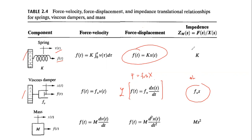Taking the Laplace transform of the damper equation with zero initial conditions, the resulting frequency domain expression is Fv·s·X(s). So the impedance ratio of force to displacement is Fv multiplied by s. This is similar to the inductive element in an electrical circuit, where the impedance of the inductor — the ratio of voltage to current — is s multiplied by L. For the spring, it is analogous to the resistor where the ratio of voltage to current is R, a constant, just as k is a constant.